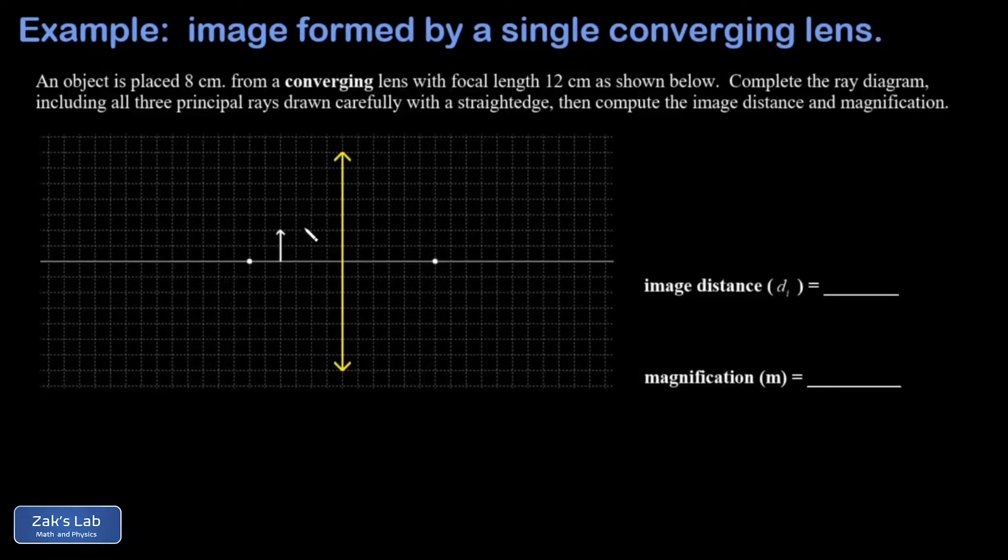So we begin with our principal rays. A ray headed horizontally off the head of that object is going to be refracted through the focus on the opposite side. A ray headed toward the center of that converging lens is going to pass through undeflected. A ray that's coming at the converging lens from the direction of the near side focus is going to be refracted horizontally, so parallel to the axis for this problem.